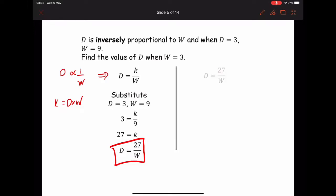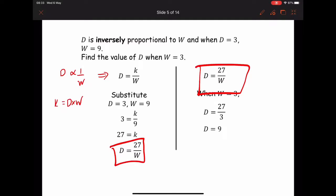Find the value of d when w is equal to 3. All you've got to do using this: when w is equal to 3, d equals 27 over 3, so d must be equal to 9. Same again, if you want to pause the video and try this question.